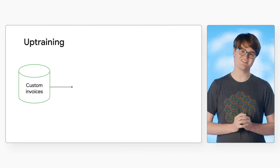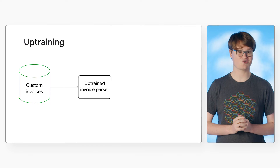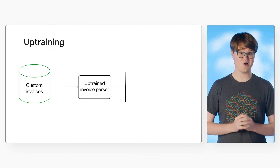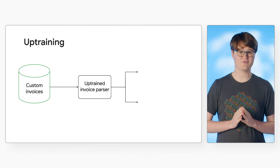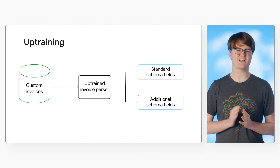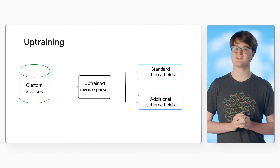Up-training a processor allows you to create your own versions of processors that are based on pre-trained processors. You can extend the existing schema to extract new fields, or you can create a processor to read a new document type that has a lot in common with an existing processor. This reduces the training and development time required, because the model has already been trained on lots of documents.